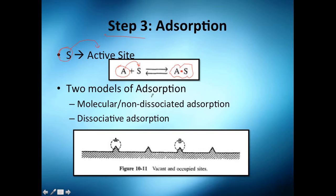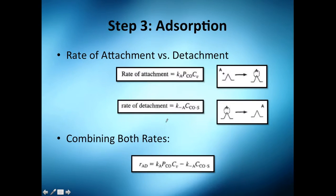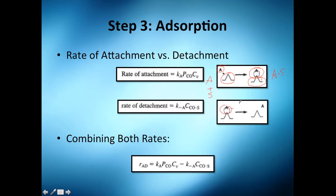We have two models of adsorption: non-dissociative adsorption and dissociative adsorption. We're going to model essentially the reactant plus the free active site forming the occupied active site. We also need to account for the rate of detachment — when the reactant leaves — because we have a balance and cannot simply consider only attachment.